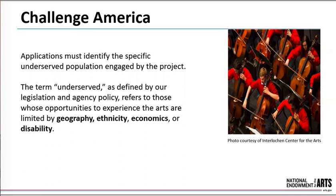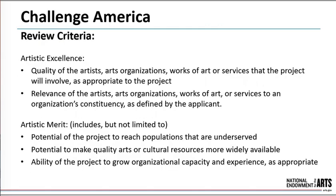In the grant application form, you must include a specific description of what underserved means in your community. This will help reviewers understand the population your project is intended to reach and how that constituency has been historically underserved. Wherever possible, include relevant details and quantifiable demographic statistics describing your intended audience. During our review process, panelists will evaluate projects based on two criteria: artistic excellence and artistic merit. Read the complete definitions in the program guidelines before starting your application.